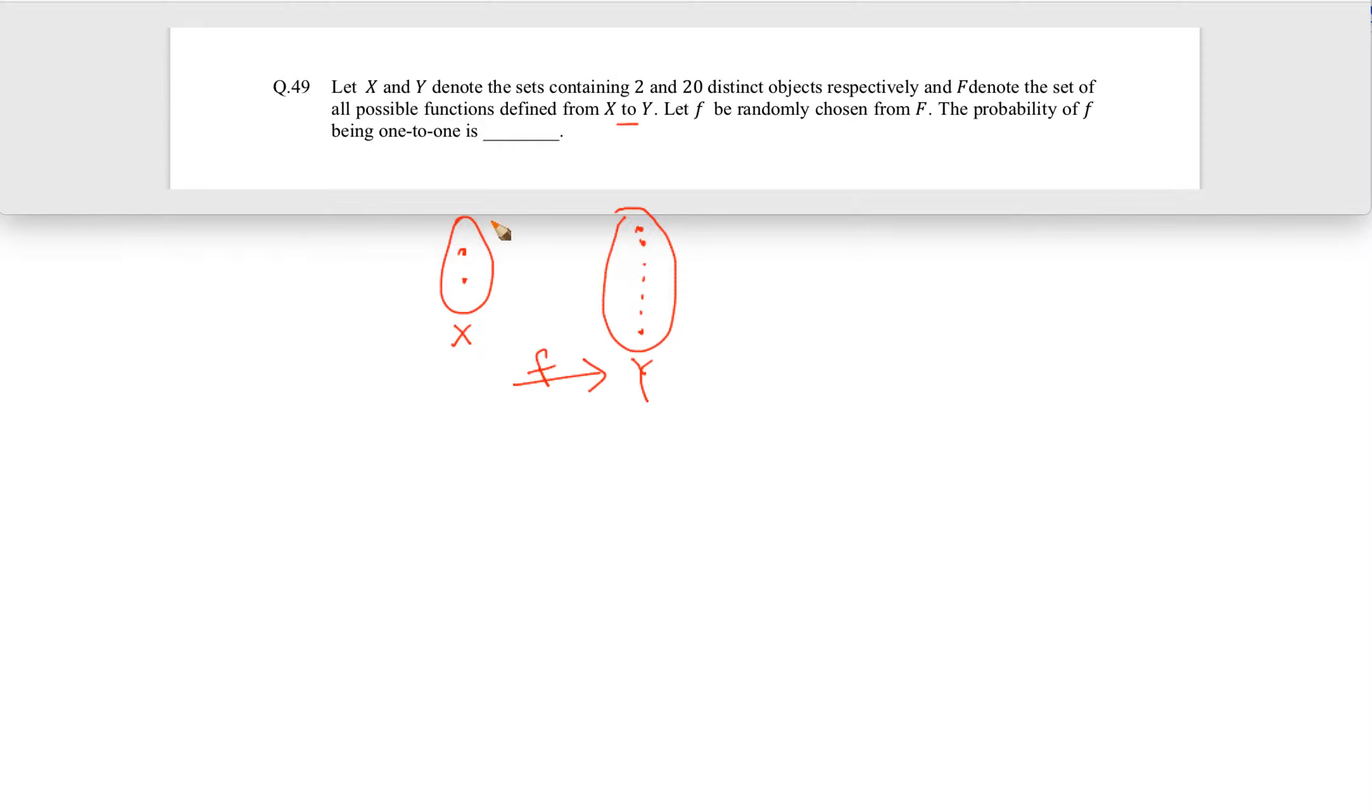The functions are defined from this set to this, and they're talking about all possible functions defined from X to Y. Let f be randomly chosen from F. Then probability of f being one-to-one is what? So we have to find the probability of f being one-to-one among all the functions.